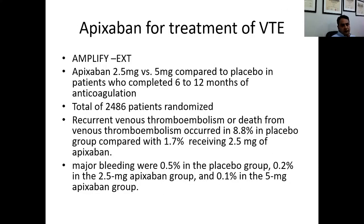For extended treatment of venous thromboembolism, the AMPLIFY Extended trial compared apixaban 2.5 mg versus 5 mg to placebo in patients who had already completed 6 to 12 months of anticoagulation. There were 2,400 patients randomized. Recurrent VTE or death from VTE occurred in 8.8% in the placebo group compared with only 1.7% in those receiving apixaban 2.5 mg. Major bleeding was 0.5% in the placebo group and 0.2% in the 2.5 mg apixaban group.